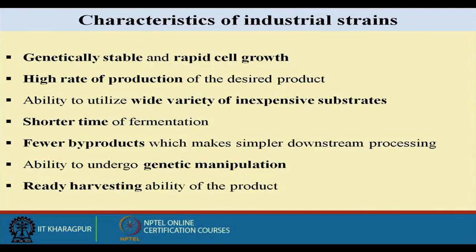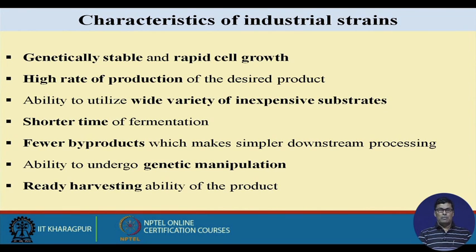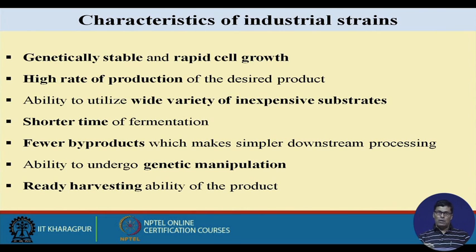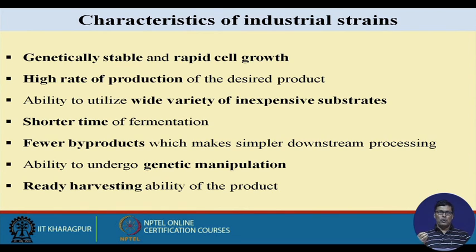Another very important factor is the ability to utilize a wide variety of inexpensive substances. If an organism can only use one type of substrate, the supplier may increase prices over time due to demand. If you have multiple choices of raw materials, you can control the cost of production to a great extent.